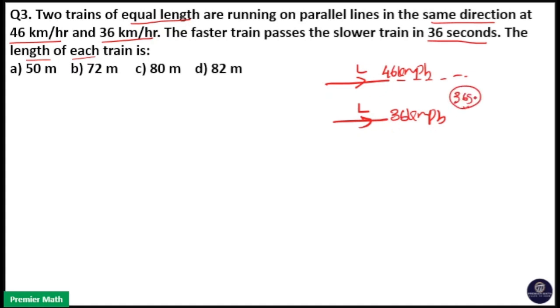That means distance covered in this 36 seconds is equal to length of the faster train plus length of the slower train. So this is the distance covered in 36 seconds.